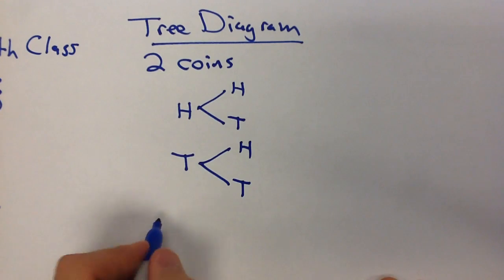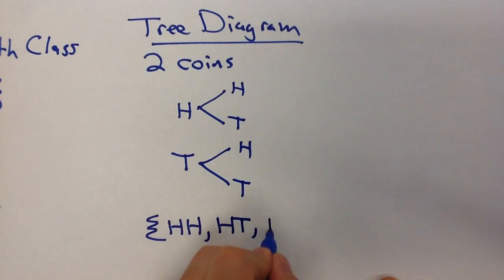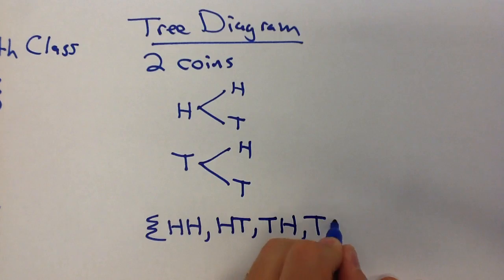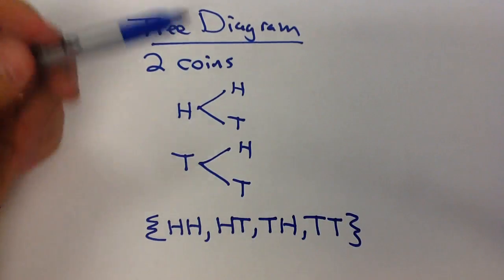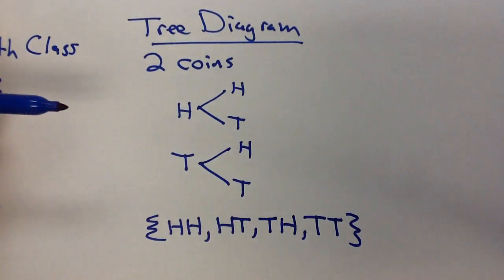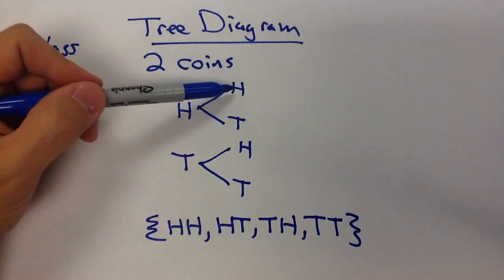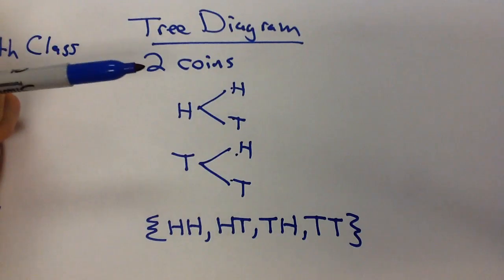But this now lets us see what all of our possible options are. We could have heads heads, heads tails, tails heads, or tails tails. And we could actually see that we have four different possibilities in our sample space, which are actually the number of branches we have on the far right.